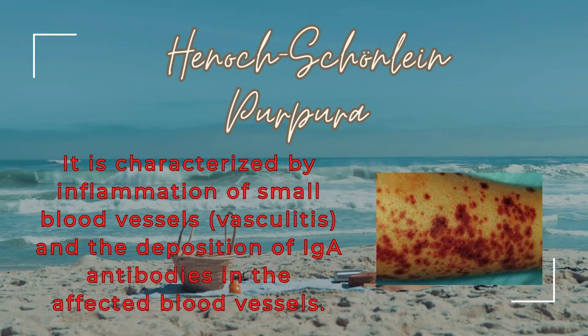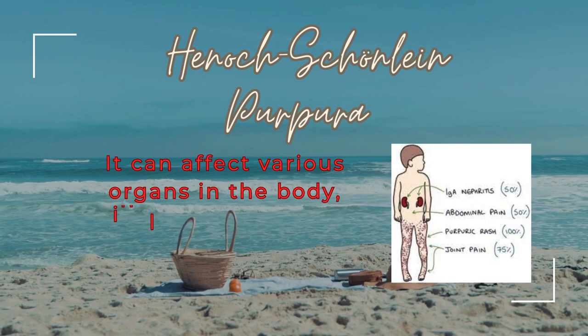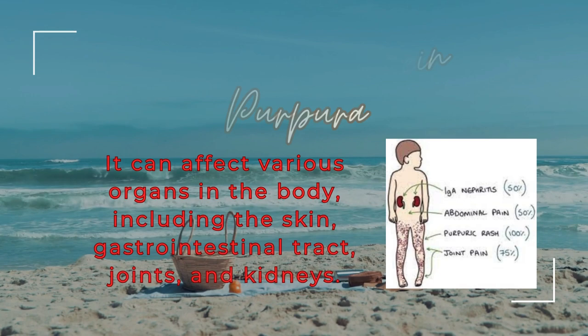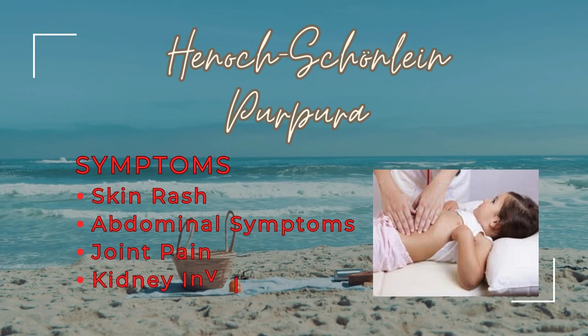Henoch-Schönlein Purpura can affect various organs in the body, including the skin, gastrointestinal tract, joints, and kidneys. Symptoms include skin rash, abdominal symptoms, joint pain, and kidney involvement.